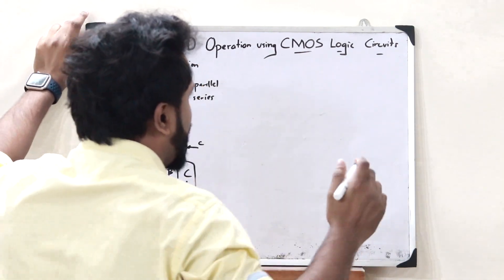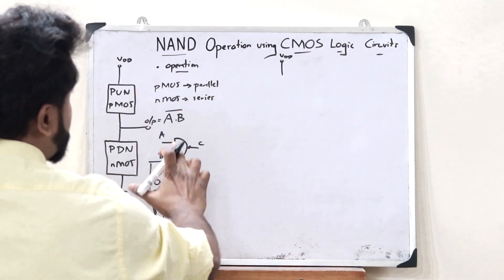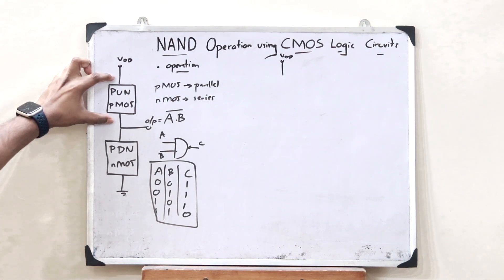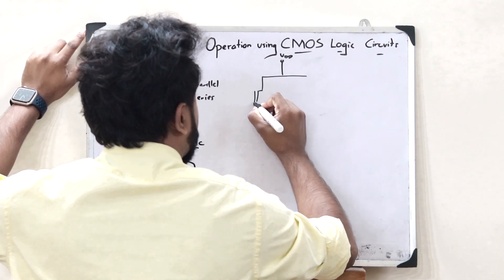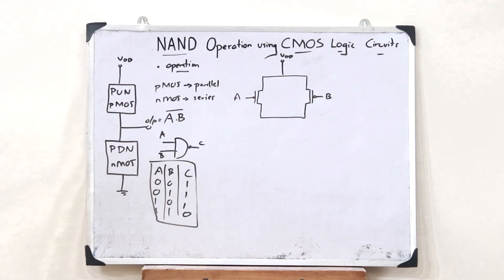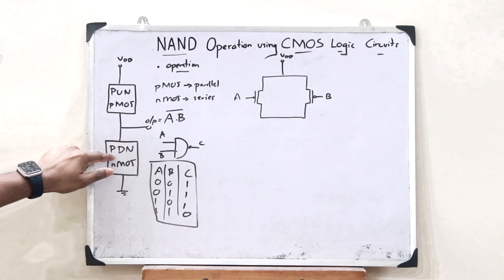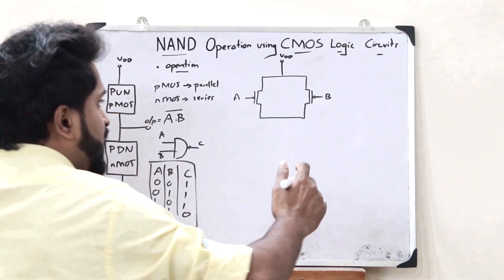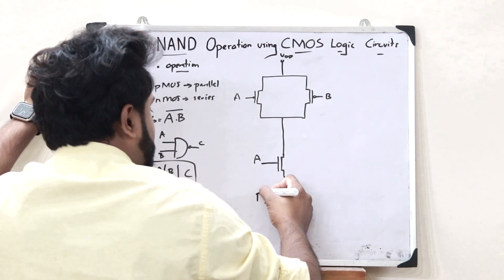Now let us construct this CMOS logic circuit. We have VDD at the top. For the dot operation, the PMOS transistors must be in parallel — so we have two parallel PMOS transistors with inputs A and B. Next, in the pull-down network we have NMOS transistors. For dot operation, these must be in series — so we have two NMOS transistors in series, with inputs A and B, and this is then grounded.